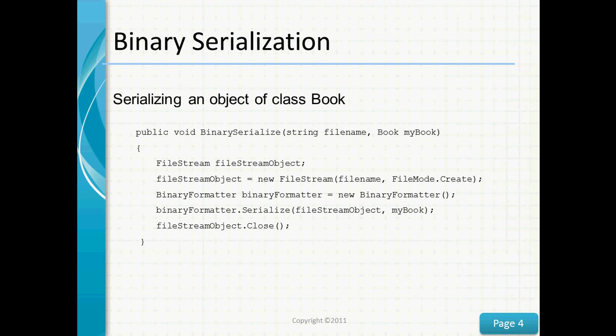Here we've got a class Book that we want to serialize. First, we create a new FileStream object by passing in a filename and the file mode Create. Next, we'll create a BinaryFormatter object, and using the BinaryFormatter's serialize method, we'll serialize myBook by passing in our FileStream object and the class myBook. Finally, we'll close the FileStream object.